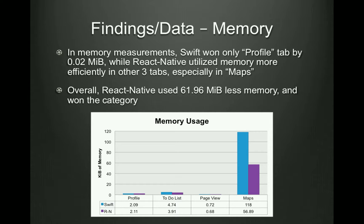Findings data for memory. In the memory measurements, Swift won only the profile tab by 0.02 megabytes, while React Native utilized memory more efficiently in the other three tabs, especially in maps. Overall, React Native used 61.96 megabytes less memory and won the category overall.